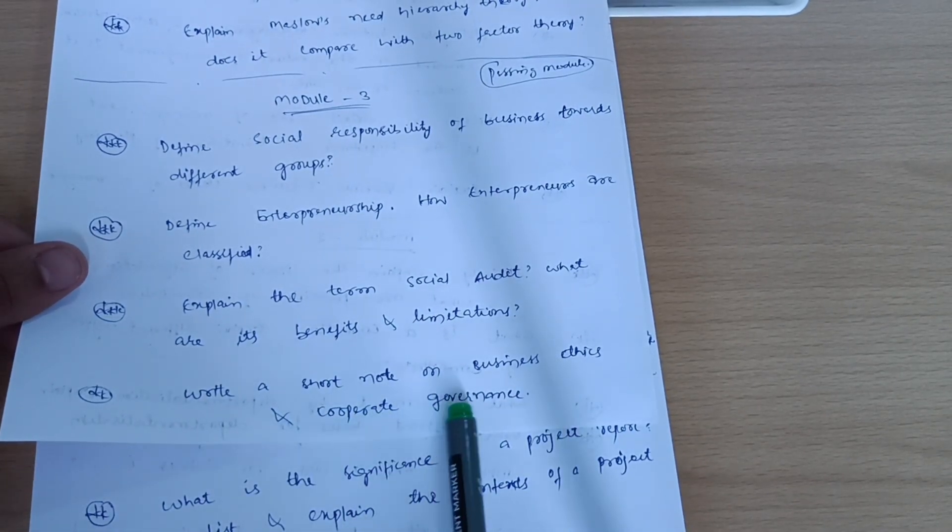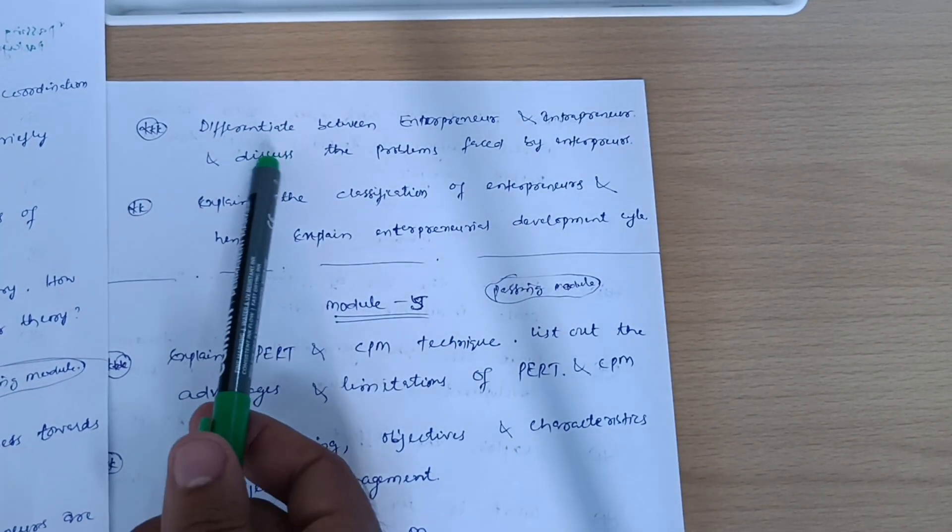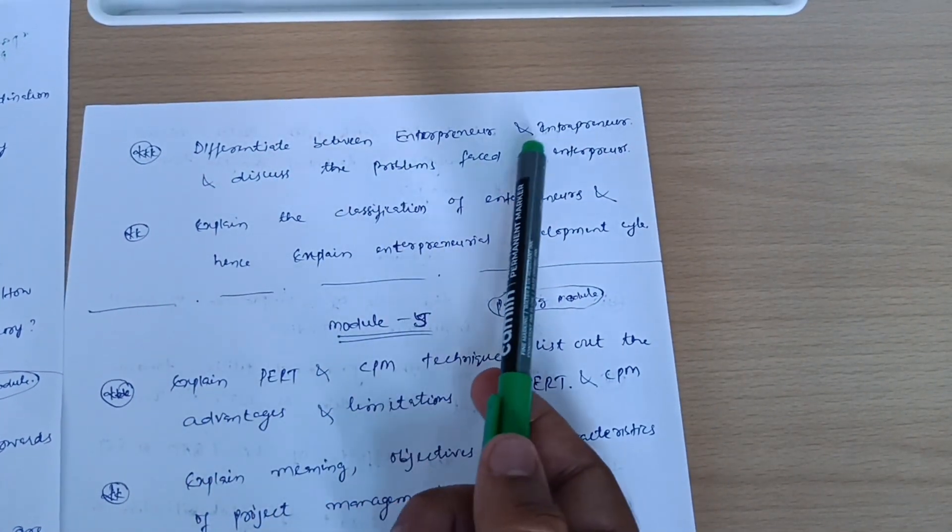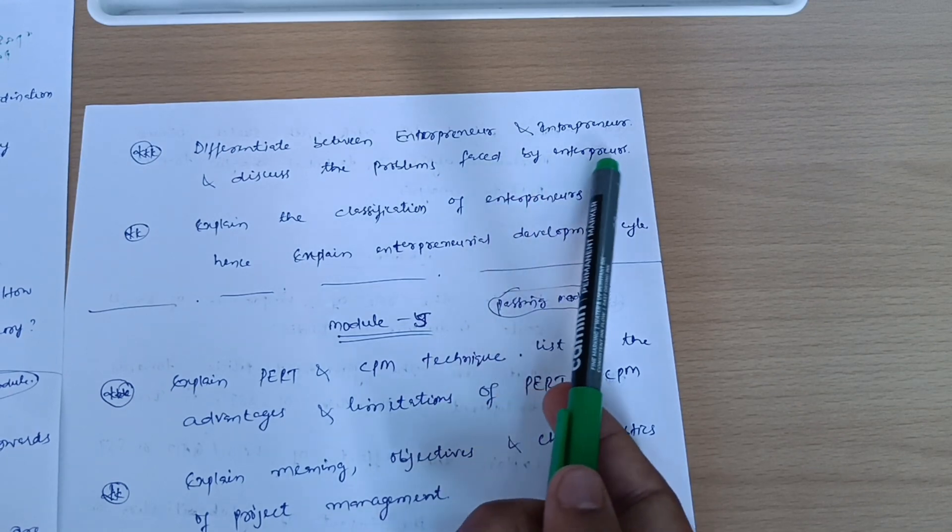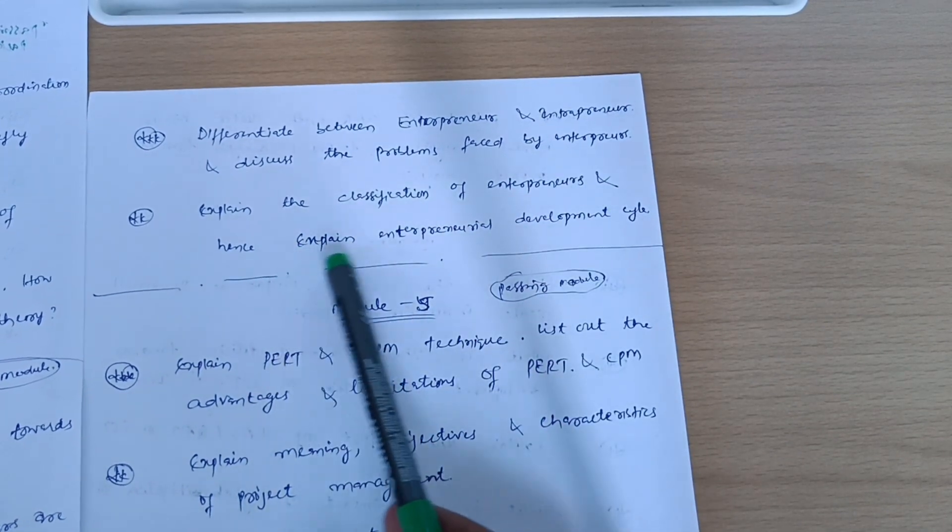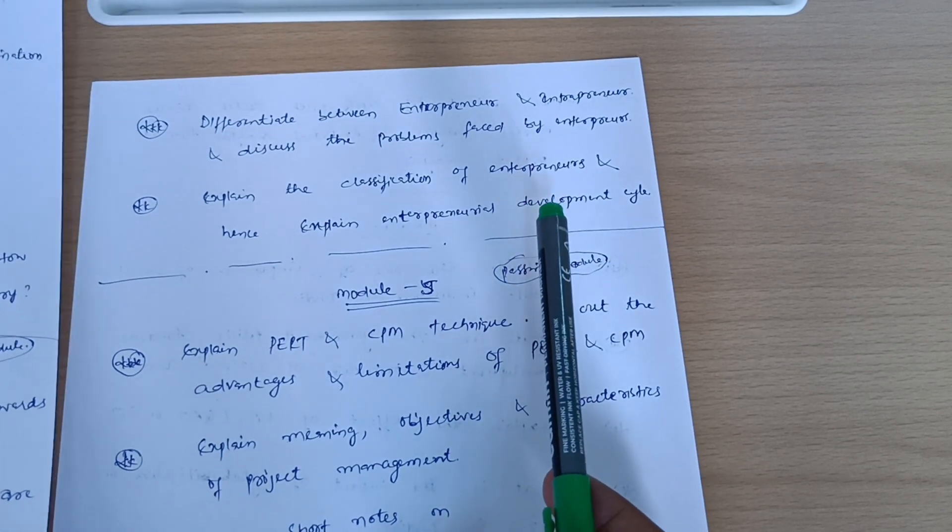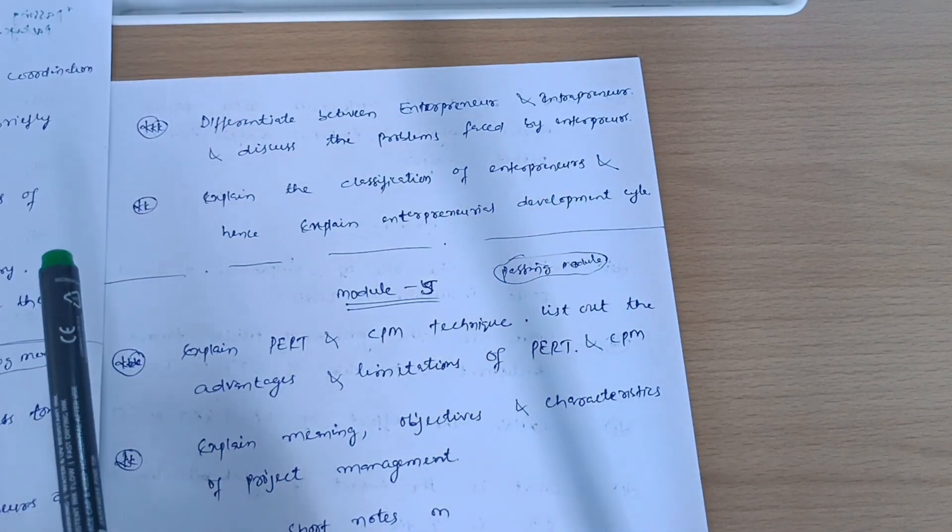These are the four questions. And next two questions from this module: differentiate between entrepreneur and intrapreneur and discuss the problems faced by entrepreneurs. Explain the classification of entrepreneurs and hence explain entrepreneurial development cycle. So these are the six questions which you have to cover from Module 3, which is a passing module.